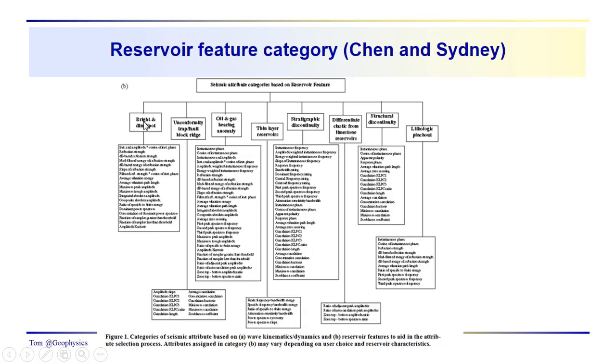You can see we have attributes for amplitude, wave shape, frequency, attenuation, phase, correlation, energy, and ratios. Up here you can probably barely read it: instantaneous amplitude, instantaneous frequency, instantaneous phase, and slope of instantaneous frequency. For reservoir features, you could be talking about amplitudes, bright spot detection, unconformities, oil and gas bearing anomalies.